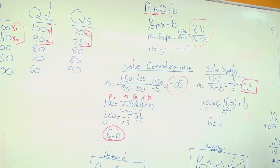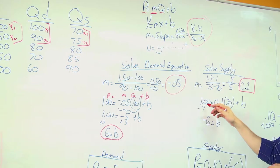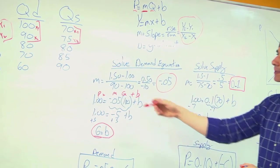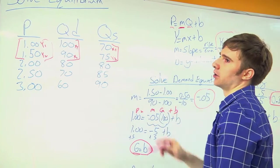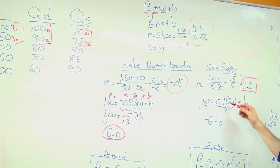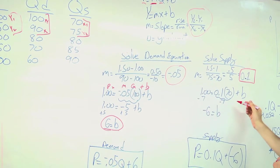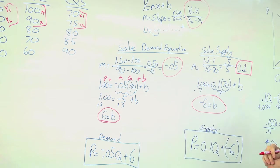Now that I have slope, I need to solve for b. So I'm going to plug in a p and a q. It can be any p and its corresponding q. So I use a dollar and 70. And I'm going to solve for b. So I'm going to have b equals a negative 6 now.